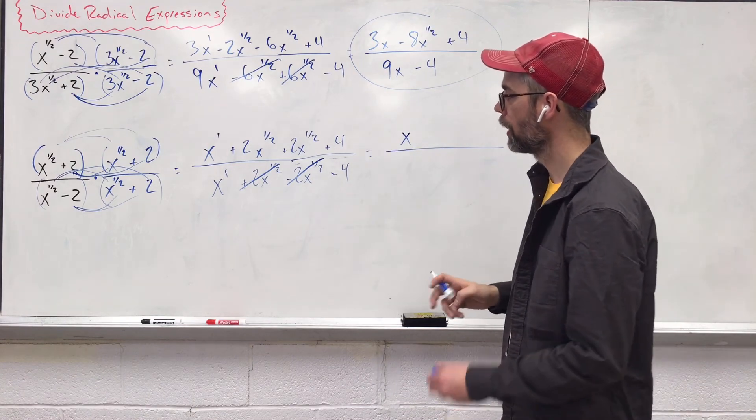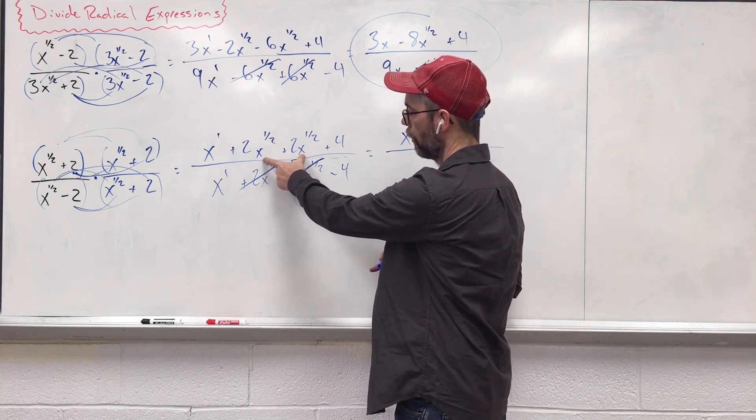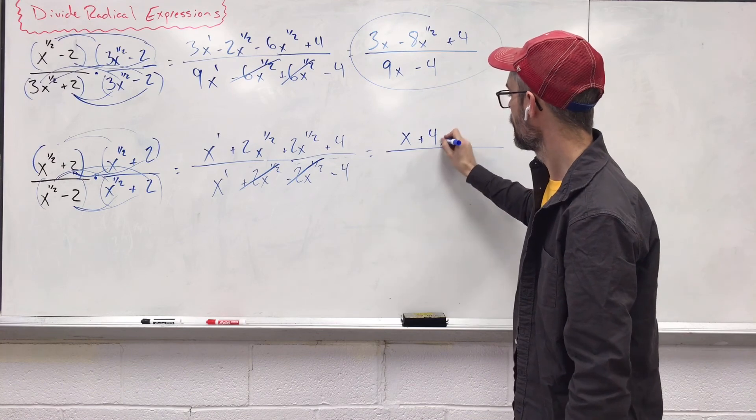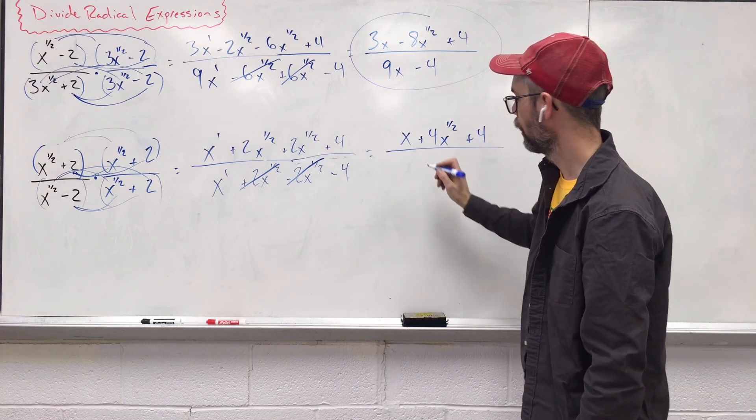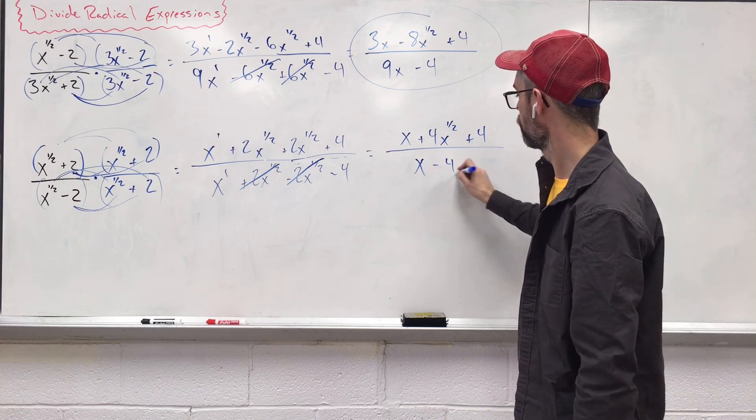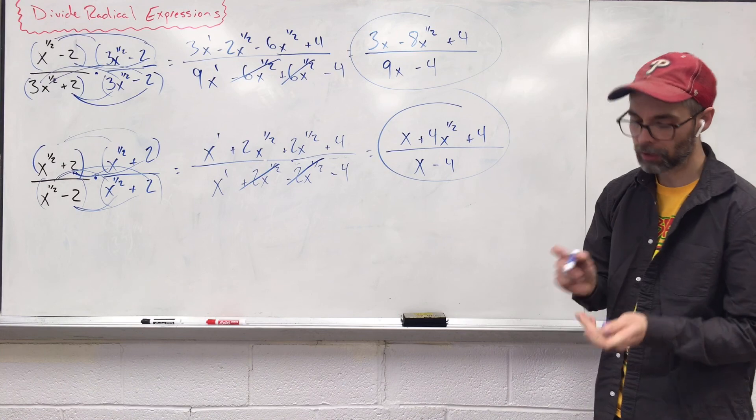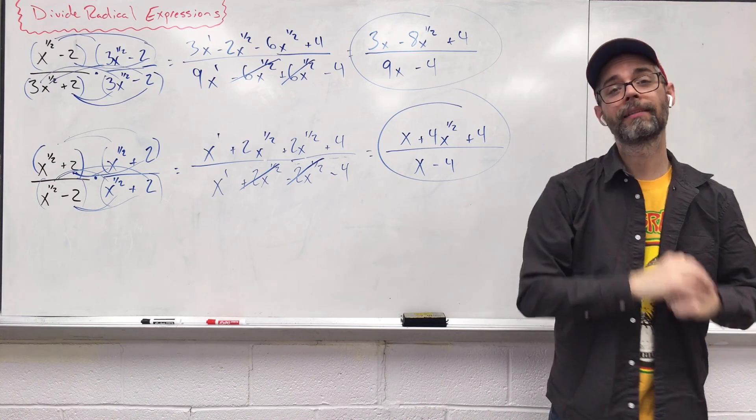x to the first. I don't need that one. Our variables are the same here. So, you're going to have 2 plus 2 gives us 4. Exponent and variable stay the same. And on the bottom, x minus 4. And that is dividing radical expressions by rationalizing the denominator and multiplying by its conjugate.